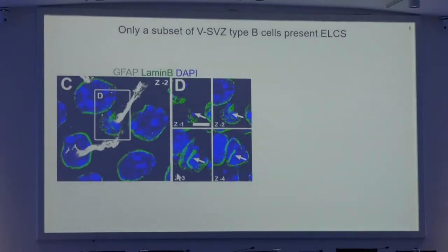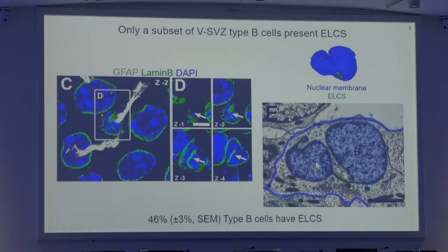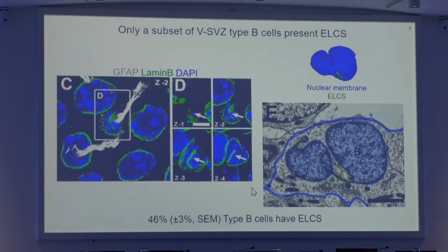The first question we wanted to answer was which cell types presented ELCs in the ventricular subventricular zone. Using confocal microscopy on whole mount samples stained for lamin B to visualize the nuclear envelope, we determined that only GFAP-positive type B cells presented structures similar to ELCs. Furthermore, we studied the complete morphology of the nuclei of these cells in three-dimensional reconstructions in the electron microscope, and confirmed that only a subset of type B cells — corresponding to 46% of the total population — presented ELCs. In contrast, none of the other cell types in this region presented this structure.